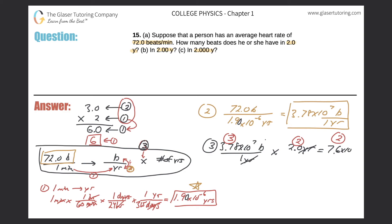So I have to do a little rounding, so it should be 7.6 times 10 to the 7 beats. That would be the answer to part a. That's the final answer.